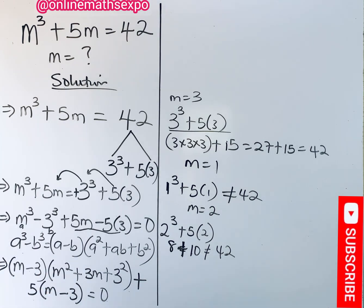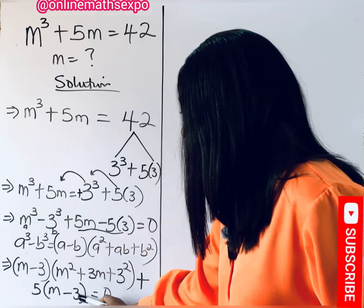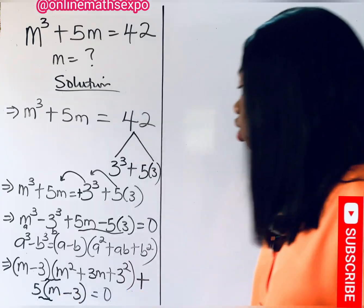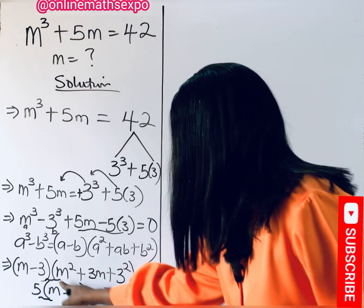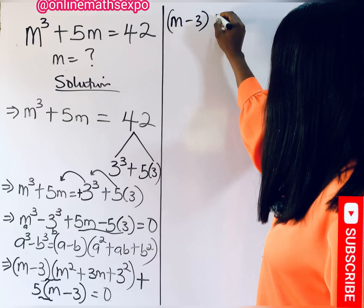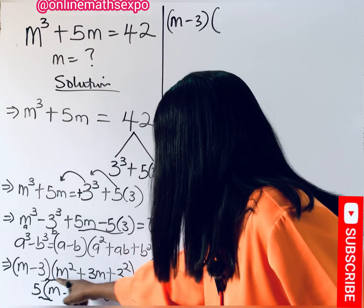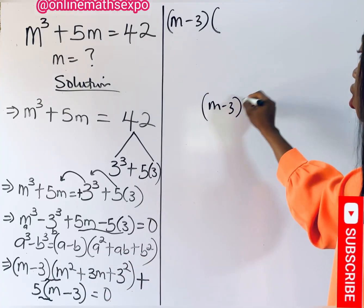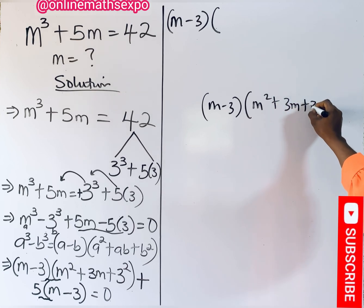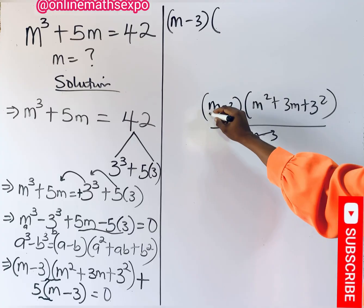Solving further, observe carefully that (m minus 3) is repeated in both terms. Since it is a common factor, we factor it out. We have (m minus 3) multiplied by the result of dividing each group by (m minus 3), giving us (m minus 3)(m² plus 3m plus 9 plus 5) equals 0.